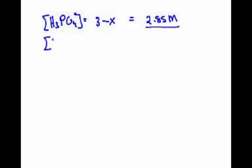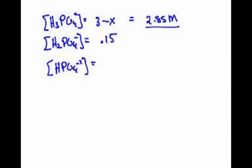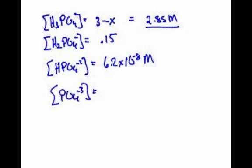The second chemical that we had was the H2PO4 minus, and that was equal to 0.15 because that was X, if you will, the first one. Then we had the HPO4 negative 2. We had to jump screens. This is going to be the 6.2 times 10 to the minus 8th molar. And then we just got the phosphate concentration, and that was small, 10 to the minus 19.